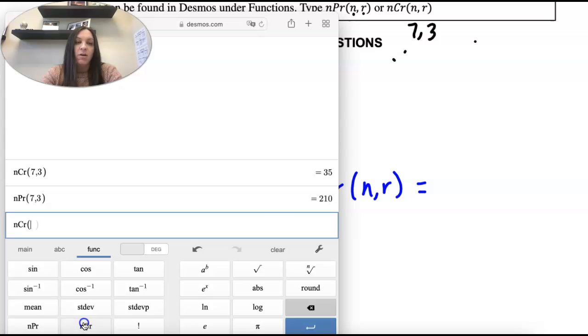So the combination of 37 choose 1 is 37, and then the permutation of 37 choose 1 is also 37.